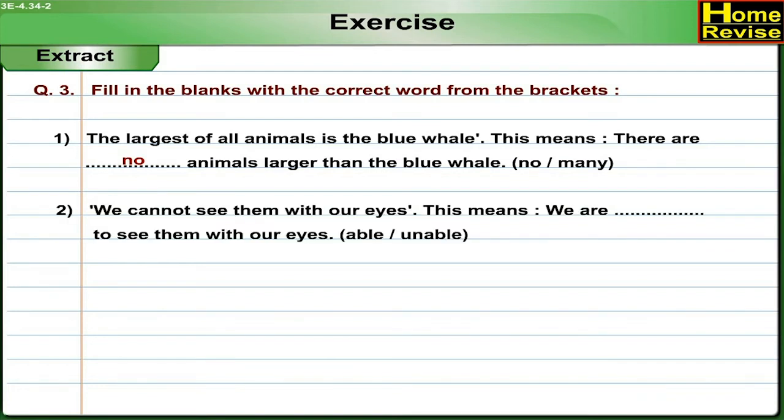2. We cannot see them with our eyes. This means we are ___ to see them with our eyes. Able/Unable. Answer: This means we are unable to see them with our eyes.